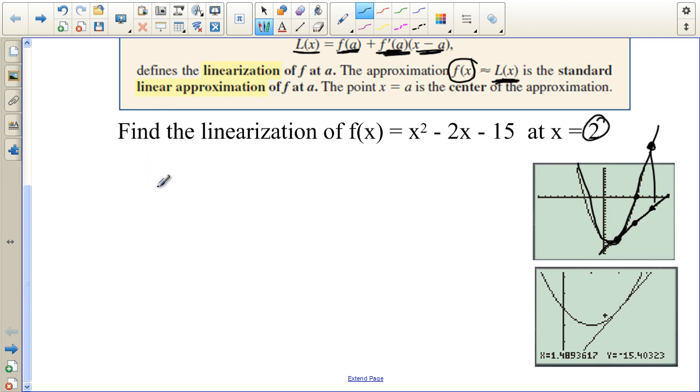This is just finding the equation of a tangent line. So we have f(2) equals 4 minus 4 minus 15. So 4 minus 4 is 0, so negative 15. So the point is (2, -15). f'(2) equals 2x minus 2, evaluated at x equals 2. That's 4 minus 2, so the slope is 2. Lots of 2s going on there.